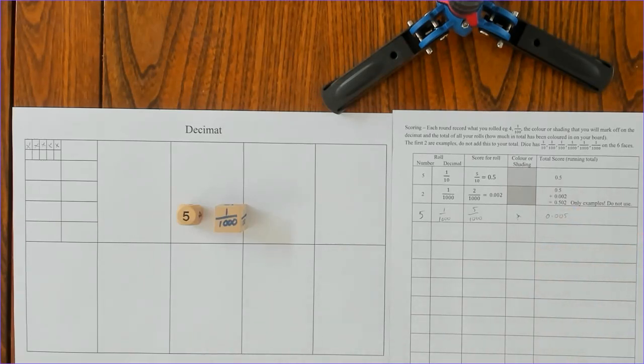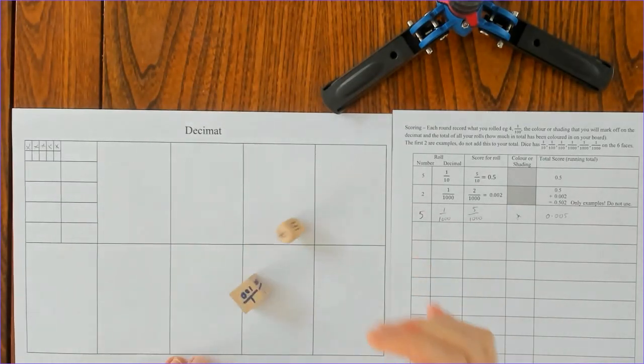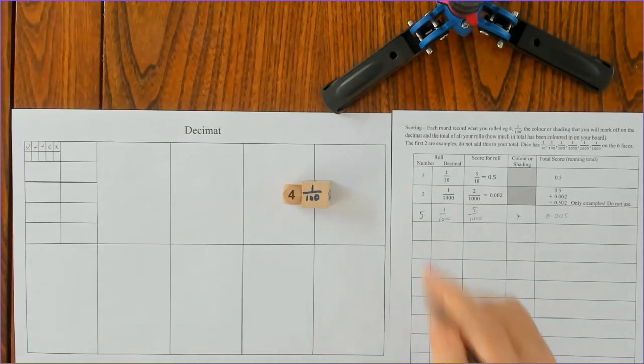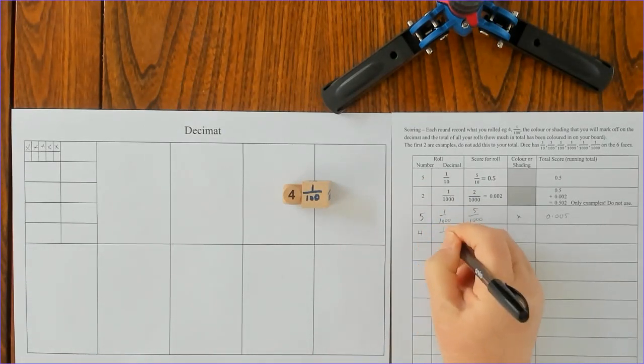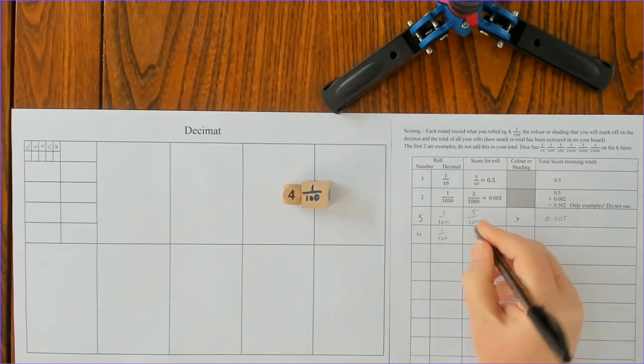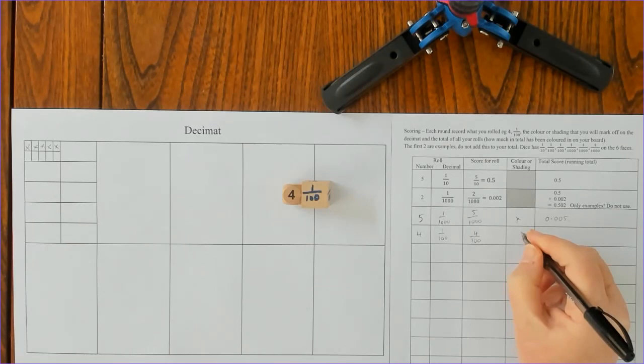The next person has a roll and they fill in their board, and then it's your turn again. This time I've scored four one hundredths. The idea is that you fill up your board completely with no gaps first. Four hundredths, let's put one, two, three, four.